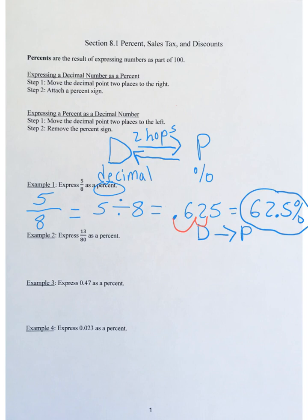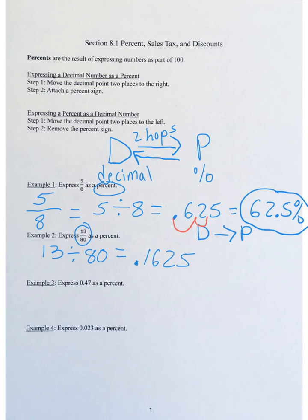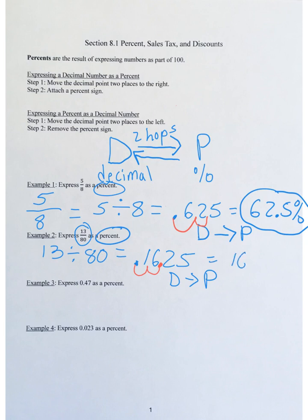Example two: express 13/80 as a percent. Type 13 divided by 80 into your calculator — you get 0.1625. There's no percent symbol, so move the decimal point two hops to the right. That lands between the 6 and the 2, giving you 16.25%. Final answer: 16.25%.